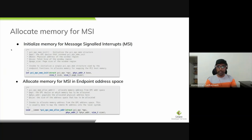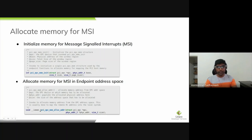The next step is to allocate memory for message signal interrupts. One of the primary requirements of a PCI endpoint device is to signal interrupts to the PCI host using PCI message signal interrupts. The endpoint framework exposes two APIs: EPC meminit for initializing MSI memory, and memalloc address for allocating MSI memory from the address space region specified in the endpoint controller device tree node or ACPI. This API returns both the virtual and physical address of the allocated memory.